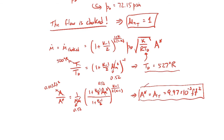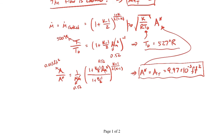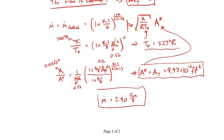Now that we have the sonic area, we can plug everything back into the choked flow mass flow rate expression. Working out all the numbers — with the necessary unit conversions — the mass flow rate comes out to be 2.40 pounds-mass per second.